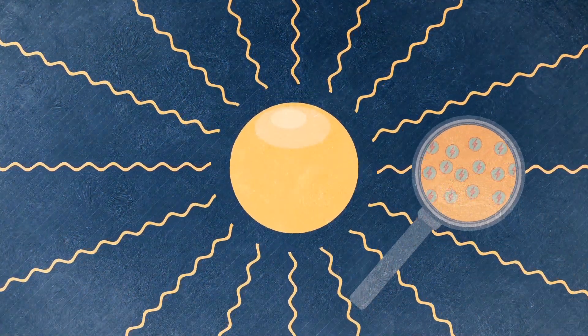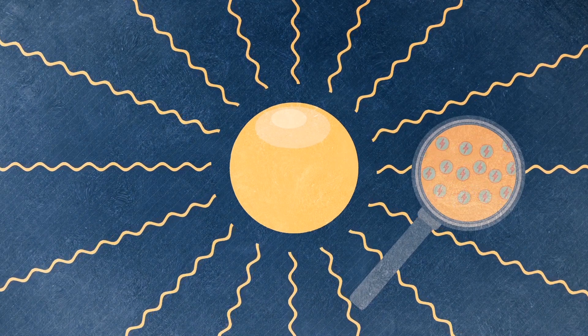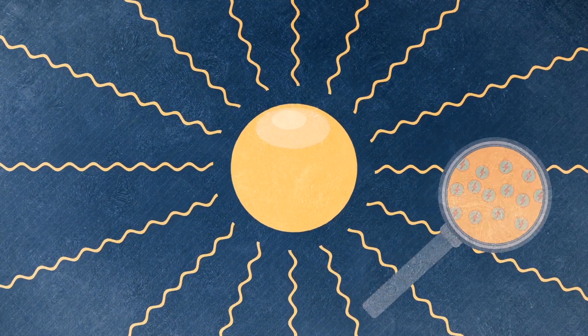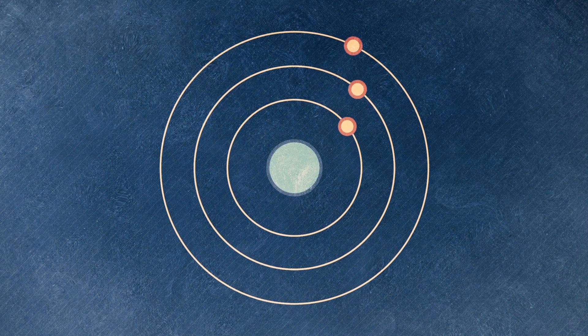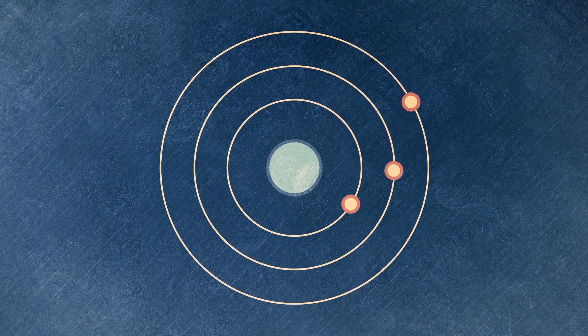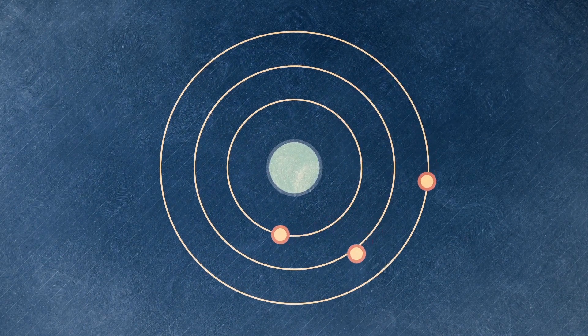Light particles are called photons, elementary particles that can also be thought of as energy packets. They're produced when an atom is excited and its electrons elevate to a higher energy level.